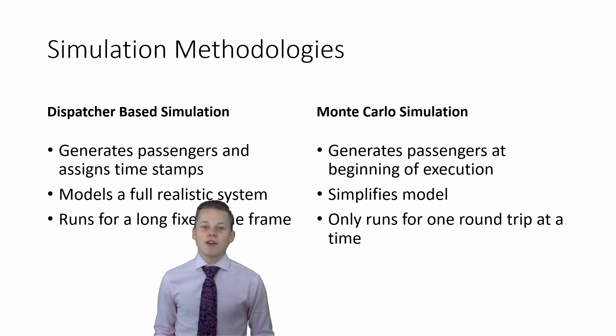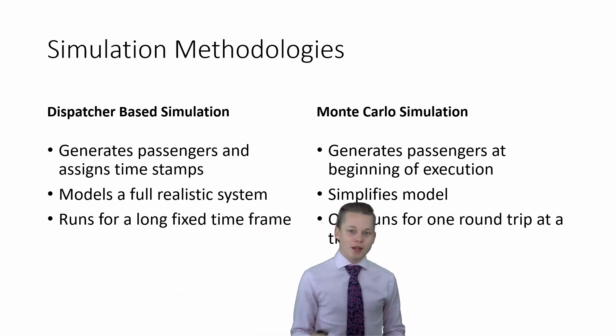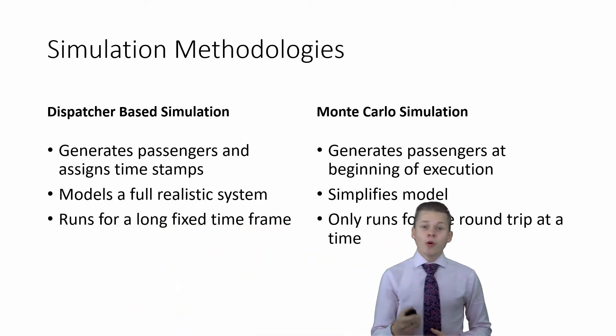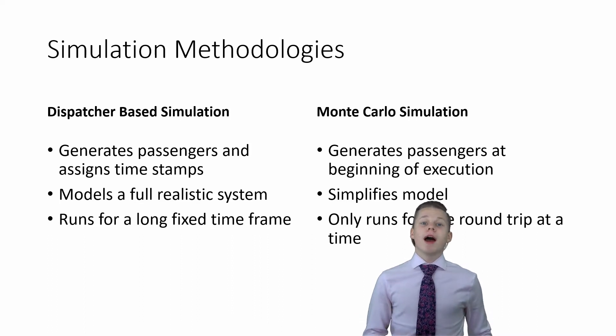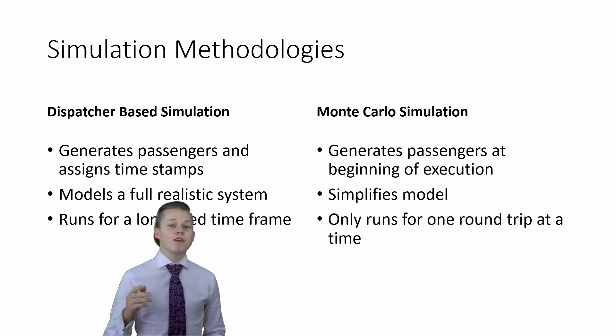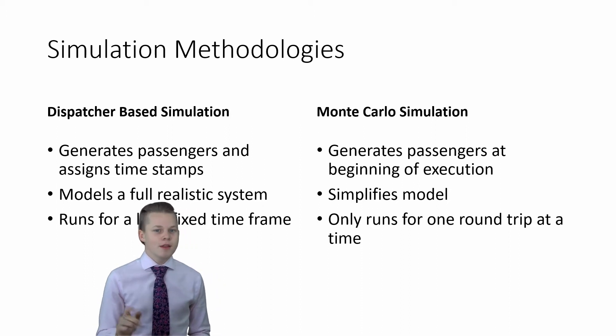So little Monte Carlo recap first. What makes this different from a dispatcher-based simulation? Well normally passengers are generated with a time marker which tells the simulation at what point they appear. It models the full system as realistically as possible and runs for a long predetermined length of time. The Monte Carlo simulation generates all the passengers at the beginning of the simulation and then just runs that one round trip. At the end of the simulation the model stops and restarts generating a new set of passengers. Let's go through those steps in a little bit more detail.